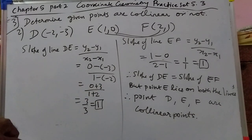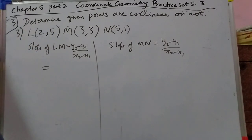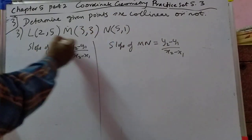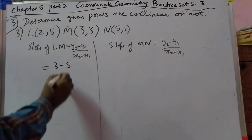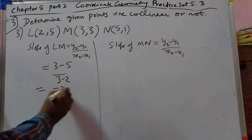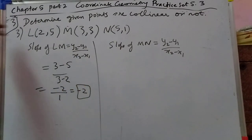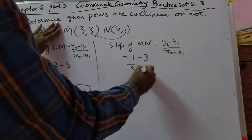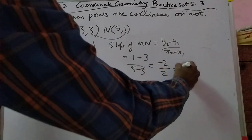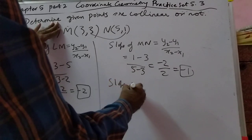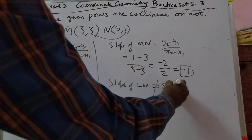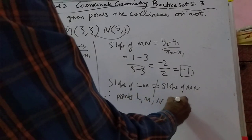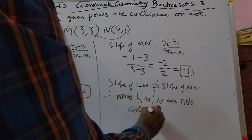Next we do the third problem. For slope of LM: 3 minus 5 over 3 minus 2, that will become minus 2 upon 1, so that is minus 2. For slope of MN: 1 minus 3 over 5 minus 3, which is minus 2 upon 2, that is minus 1. They are not equal. Therefore slope of LM is not equal to slope of MN; therefore points L, M, N are not collinear.